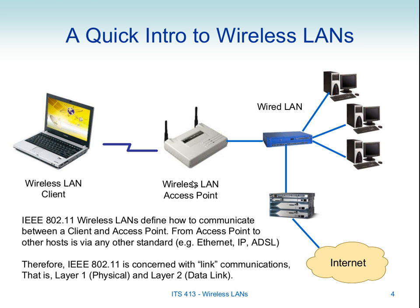The most common topology of a wireless LAN is that we have a client — your laptop, your mobile phone, some mobile device, in some cases fixed devices — and it connects wirelessly with an access point: a device which then connects, usually via wires, onto a wired network.